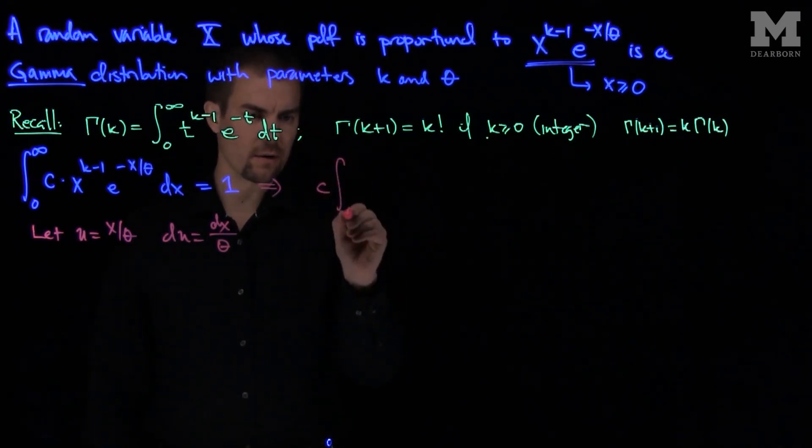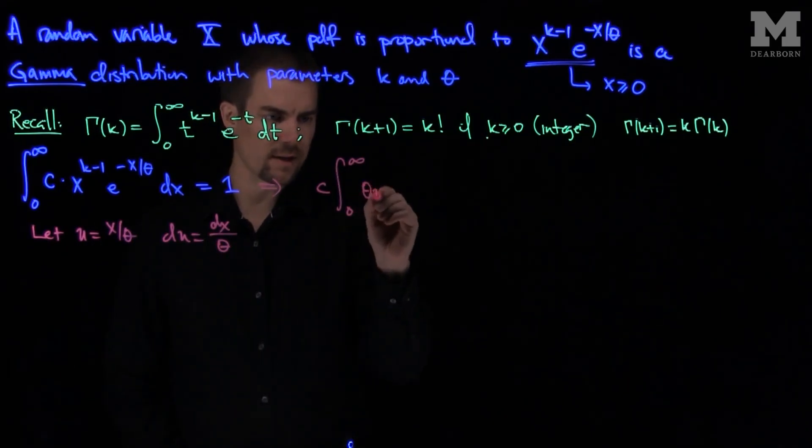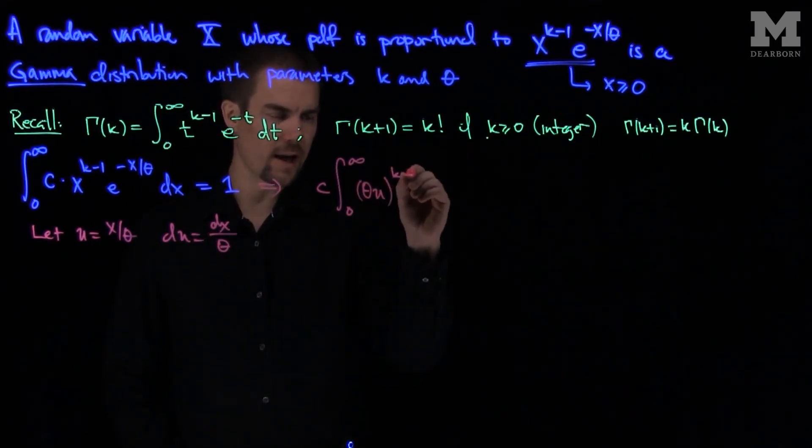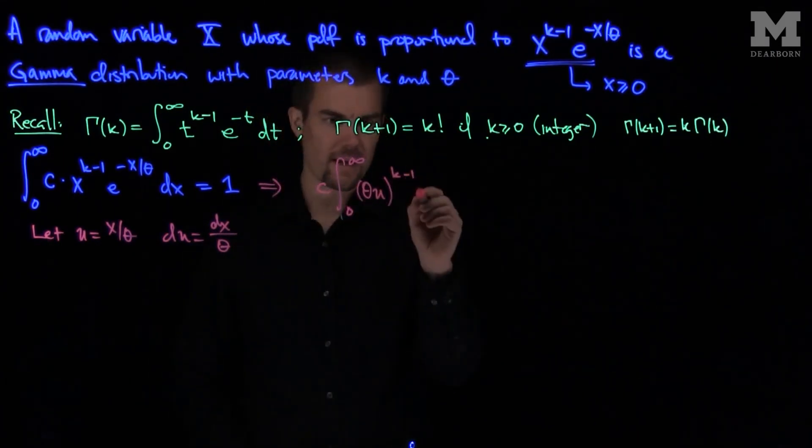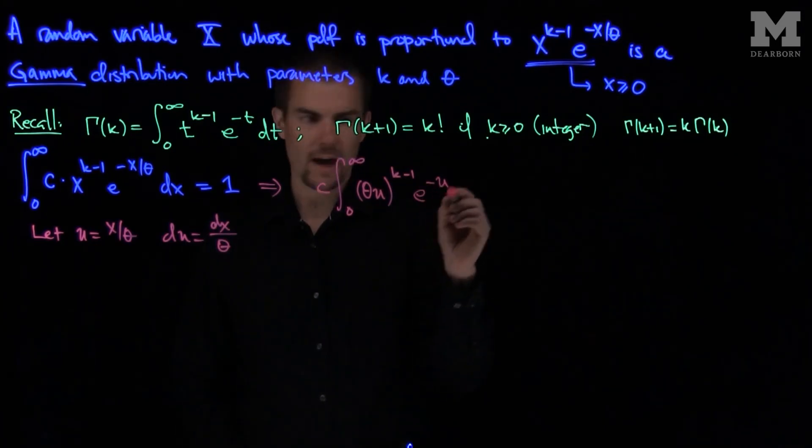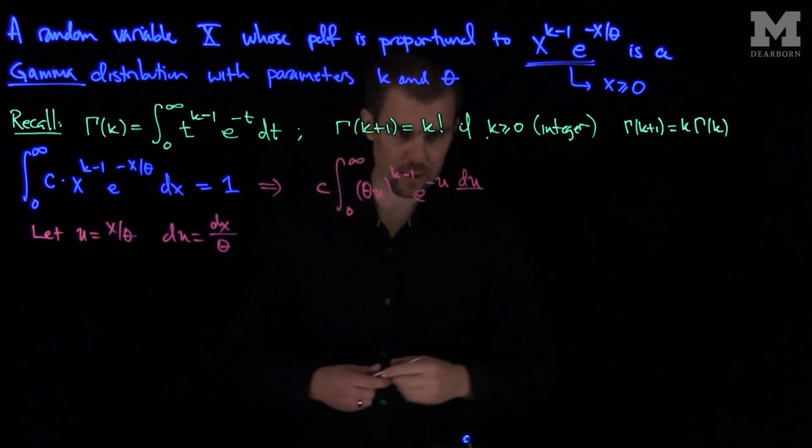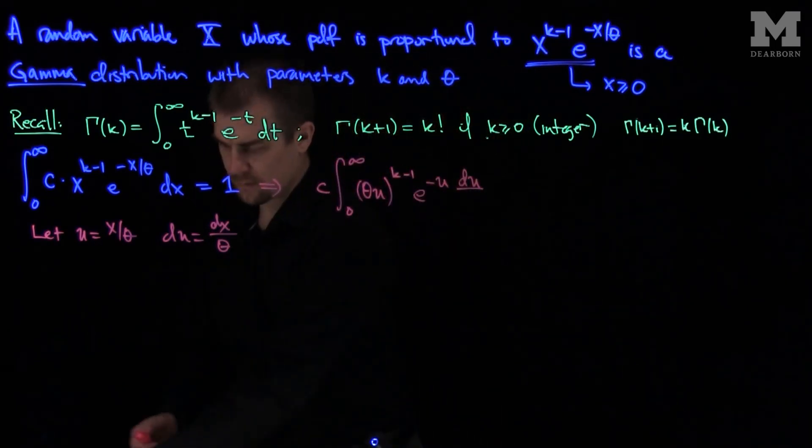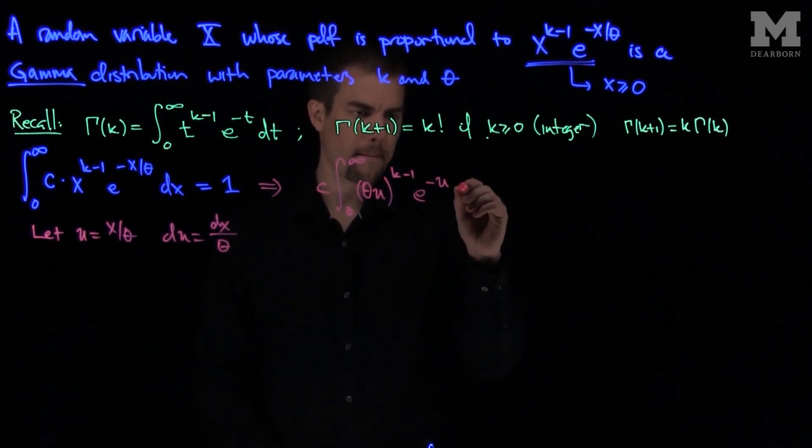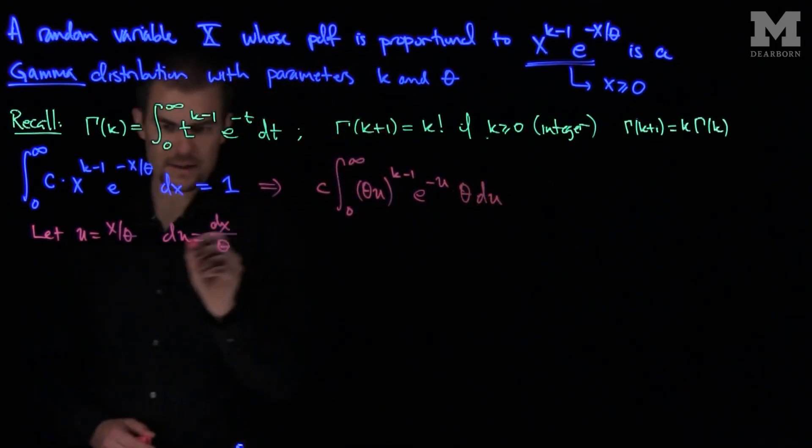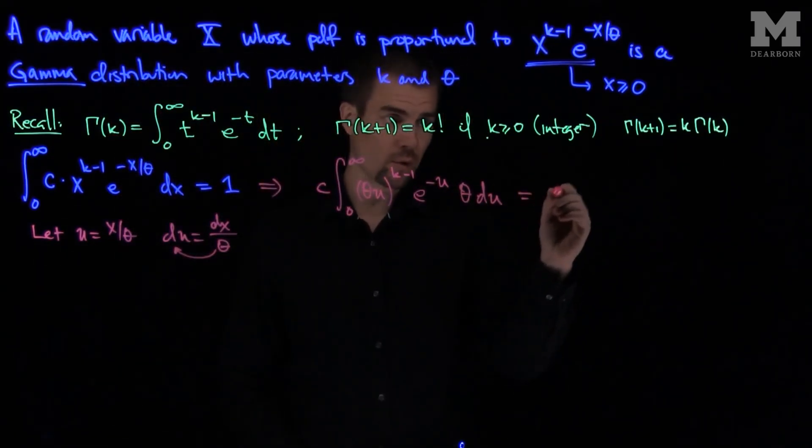Well, we're going to have c, the integral from 0 to infinity, my limits won't change. But now x gets replaced with theta times u to the power of k minus 1. And then we're going to have an e to the negative u, and then we'll have du times theta. Because dx is going to be a theta du.